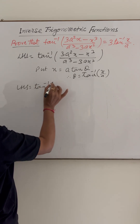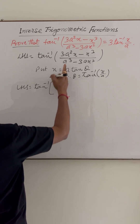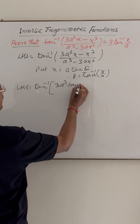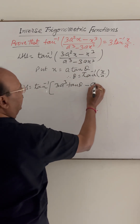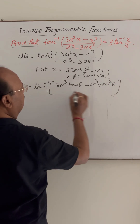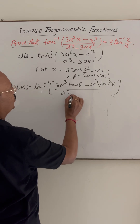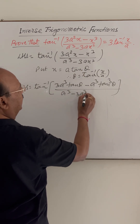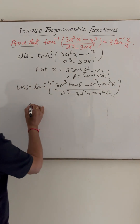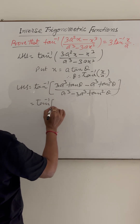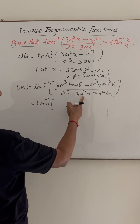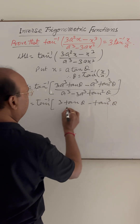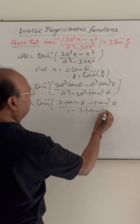Now the left hand side becomes tan inverse of 3a²x, where x is a·tan θ, so a² into a is a³, giving 3a³·tan θ. Minus x³ gives a³·tan³θ. The denominator is a³ minus 3a·(a·tan θ)², which is a³ minus 3a³·tan²θ. So we get tan inverse of (3·tan θ - tan³θ) upon (1 - 3·tan²θ), after cancelling a³ from numerator and denominator.